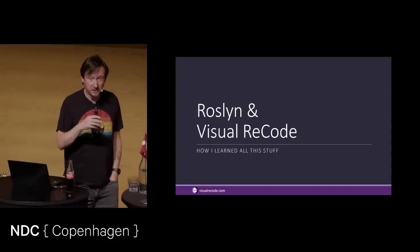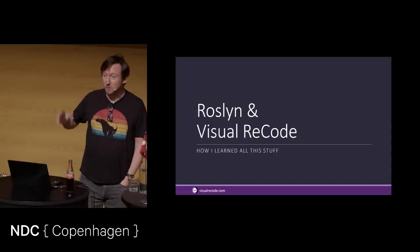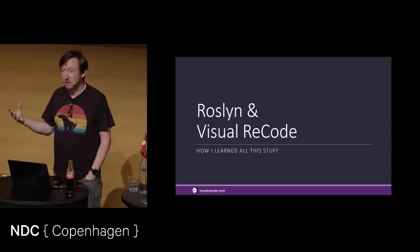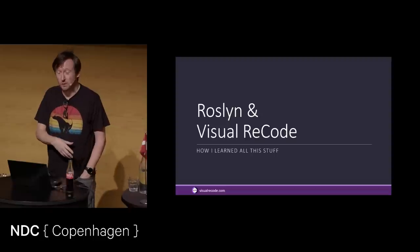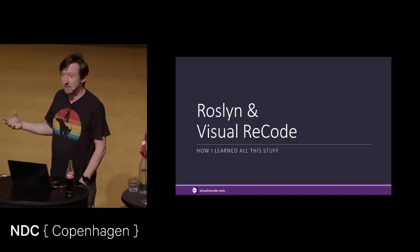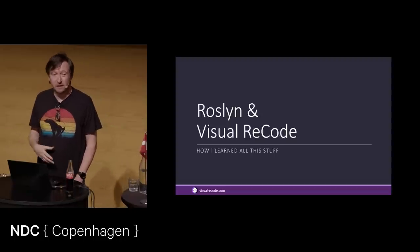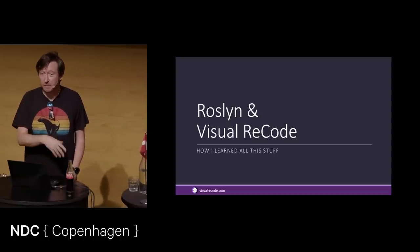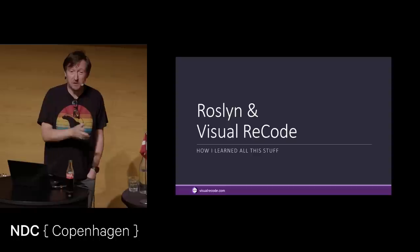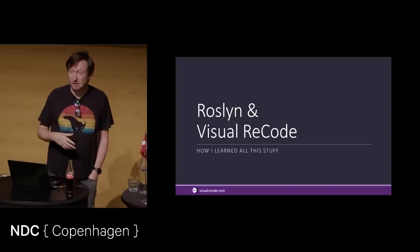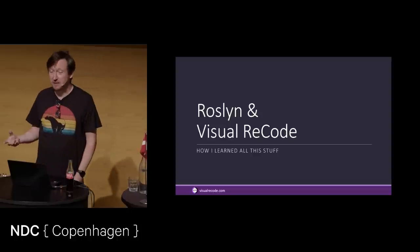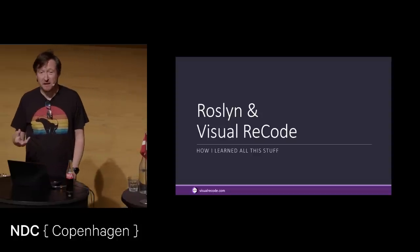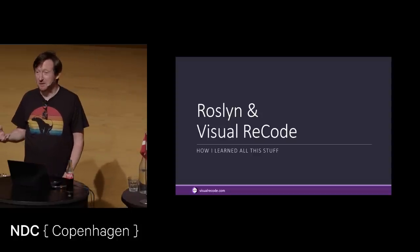And around the time of .NET Core 3.1, Microsoft said we're not supporting WCF in .NET Core, or web forms, or a couple of other things. If it's not in now, it's not coming at all. And WCF people went, hang on, what are we supposed to do? And Microsoft said: rewrite it to gRPC.